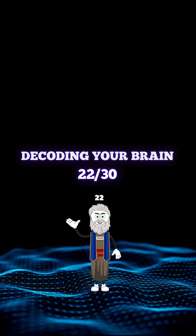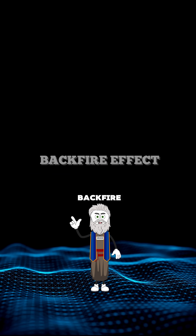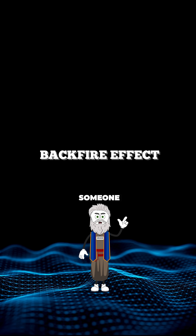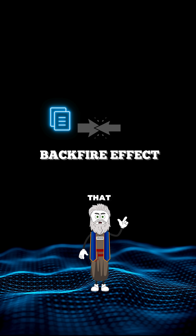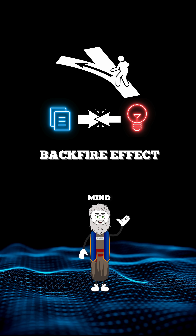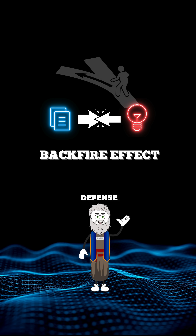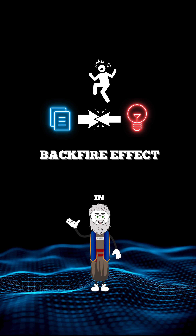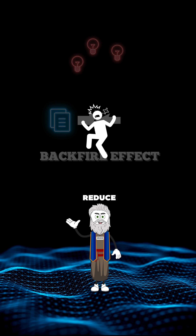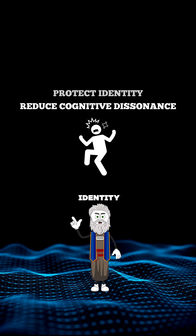This is day 22 of decoding the human brain. The backfire effect is a cognitive bias where presenting someone with information that contradicts their deeply held beliefs doesn't open their mind — it triggers the opposite. The brain's defense mechanism kicks in, doubling down on the original belief to reduce cognitive dissonance and protect identity.